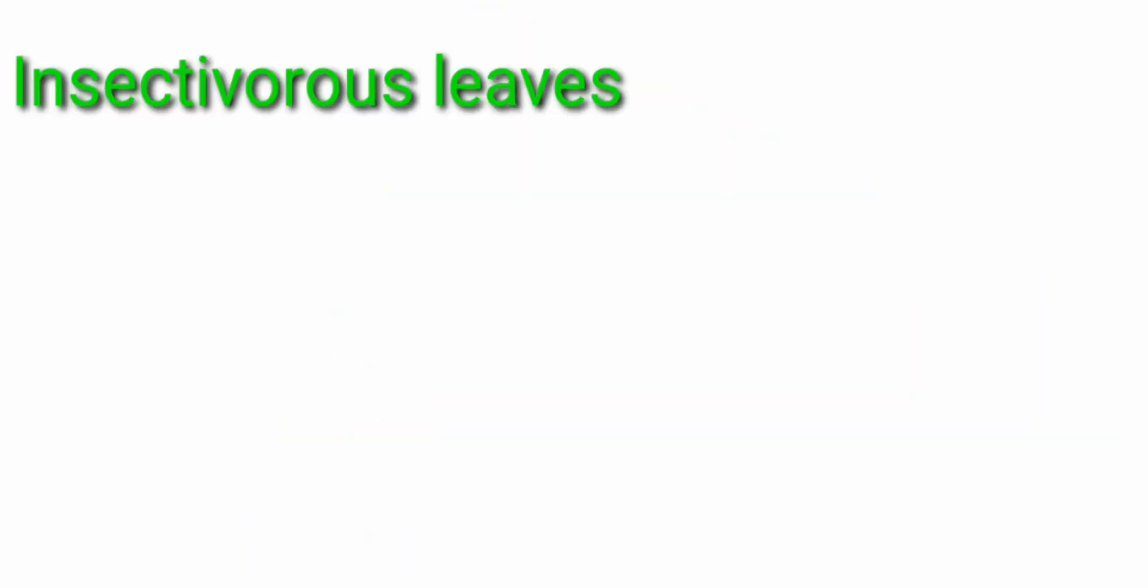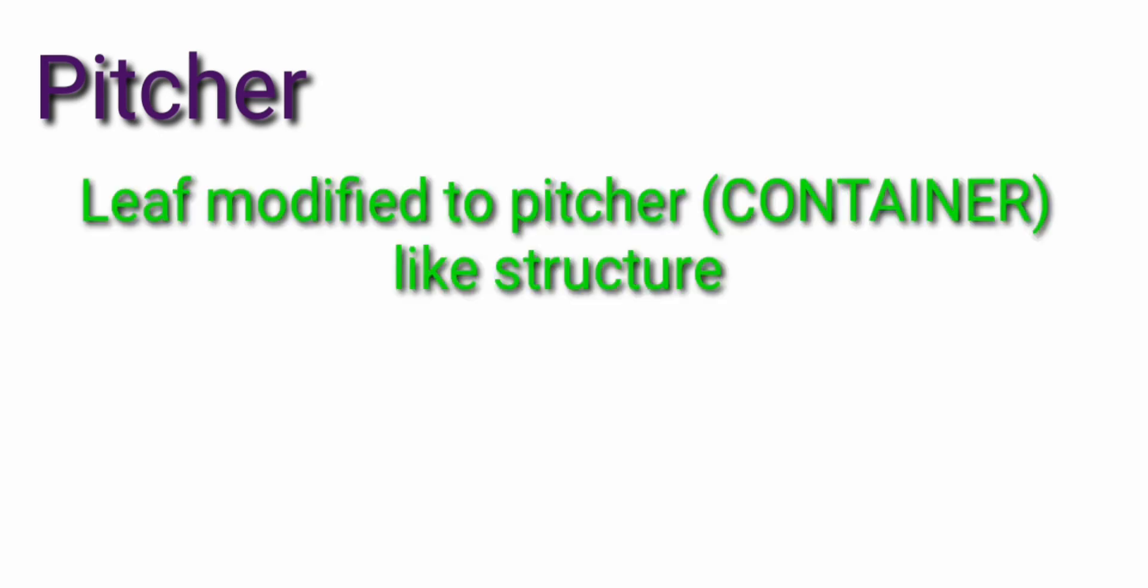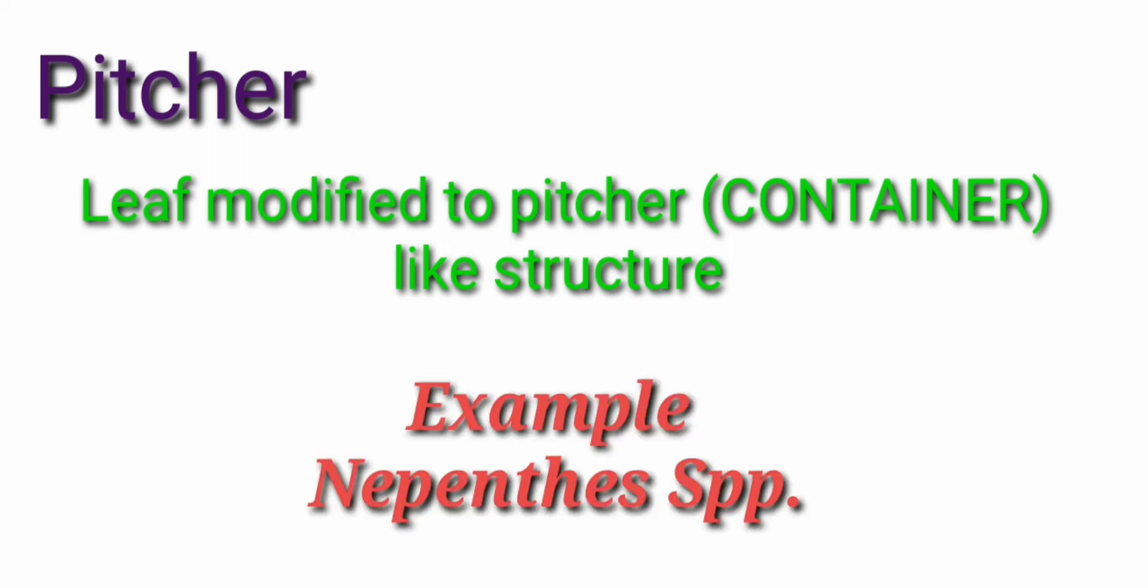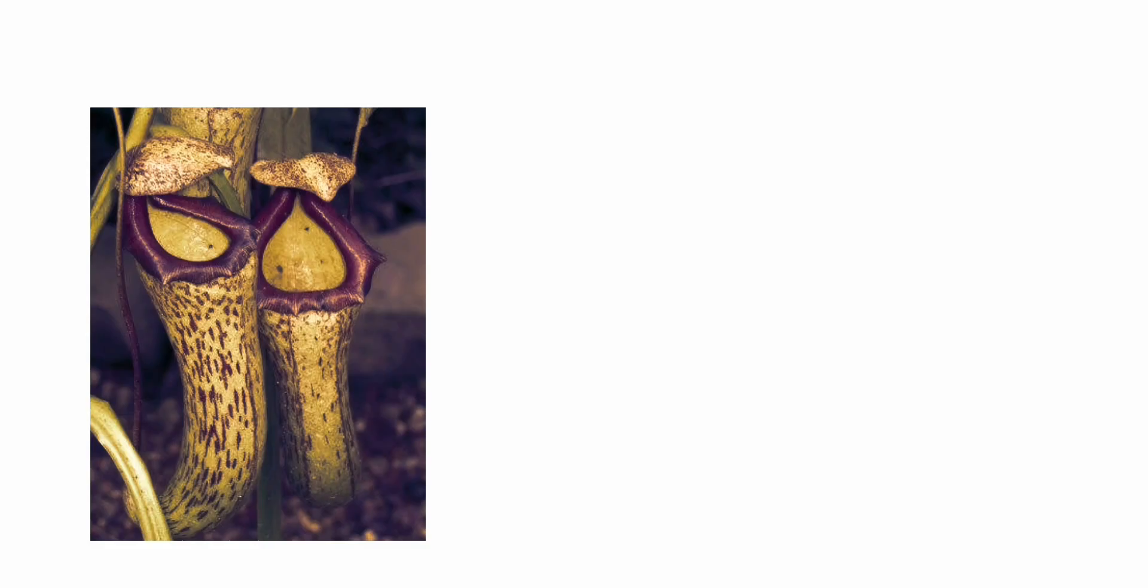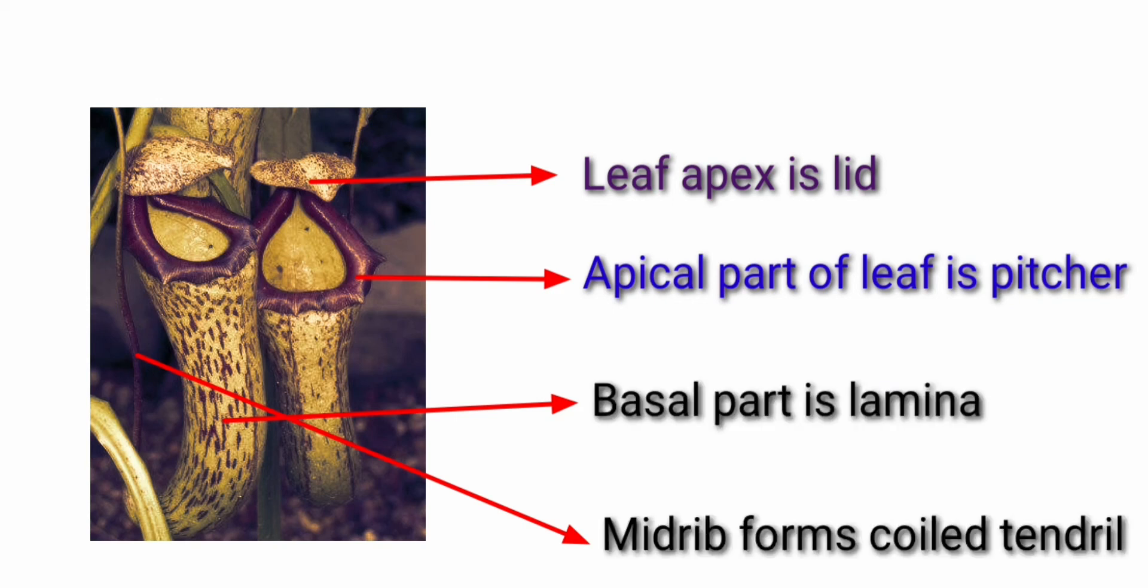Next one is the insectivorous leaves. What does the name indicate? It is insectivorous leaf. So the name itself is indicating there is some relationship between the insects and the leaf. So these leaves trap the insect and digest them to balance the nutrition level, particularly nitrogen content. First, we are going to see about the pitcher plant. Leaf is modified as pitcher, that is container-like structure. Example for the pitcher is Nepenthes species. Here, leaf apex is modified into lid and the apical part of leaf is modified into pitcher and the basal part is lamina and midrib is modified as tendrils.